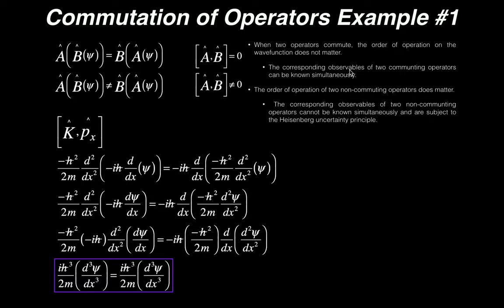But if you have two operators that do not commute, then the order of operation does matter, in which case the observables that correspond to those two non-commuting operators cannot be known simultaneously and are subject to the Heisenberg uncertainty principle. The most basic statement of the Heisenberg uncertainty principle is that you cannot know the position and momentum of a particle simultaneously — so really, the operators for position and momentum would not commute.